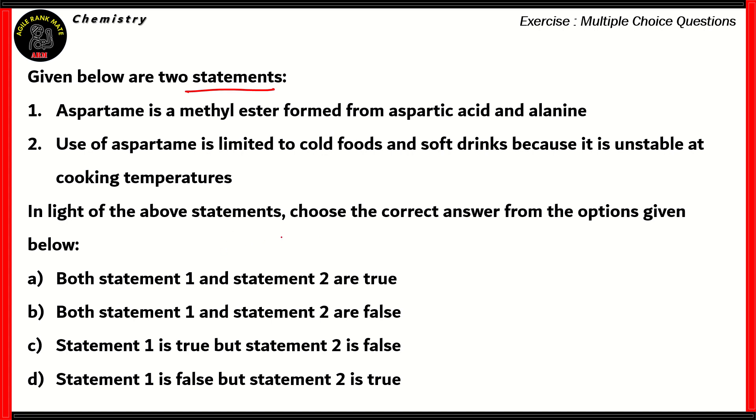We need to find out the right statements, and from there, choose the correct answer. So first of all, the first statement says aspartame is a methyl ester formed from aspartic acid and alanine.